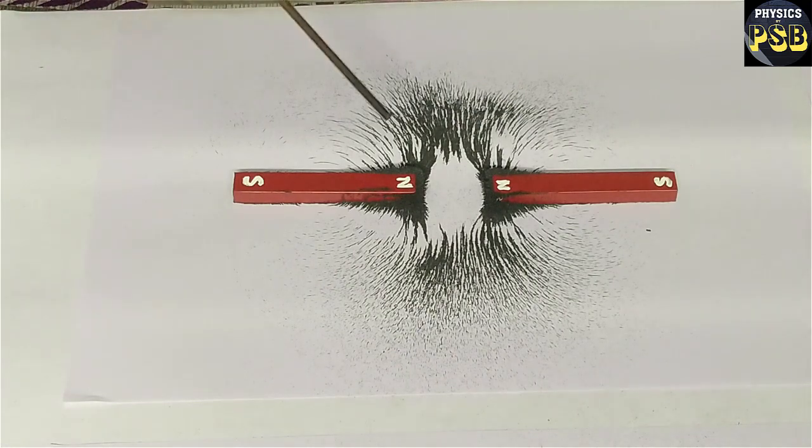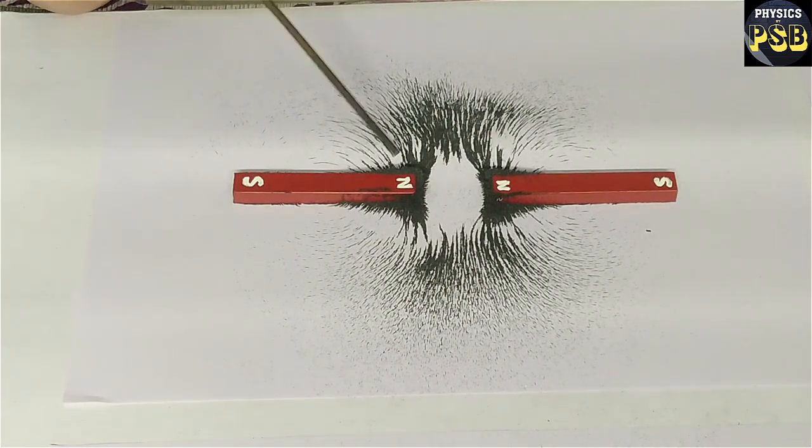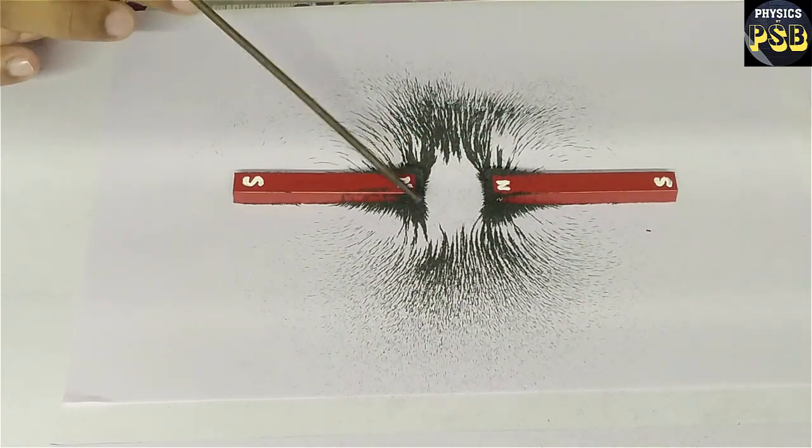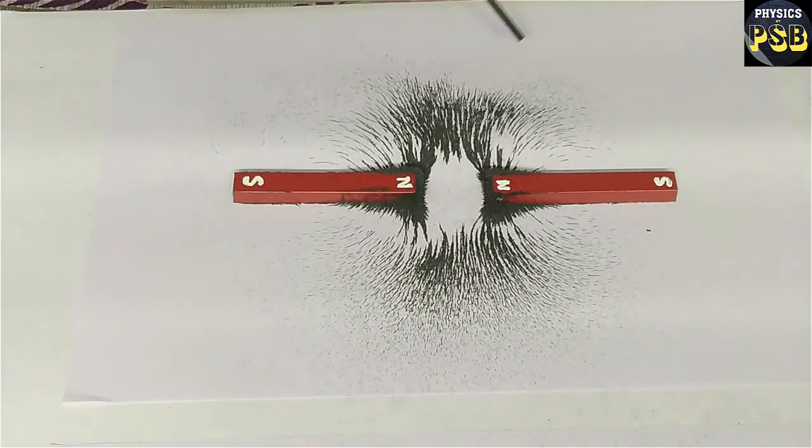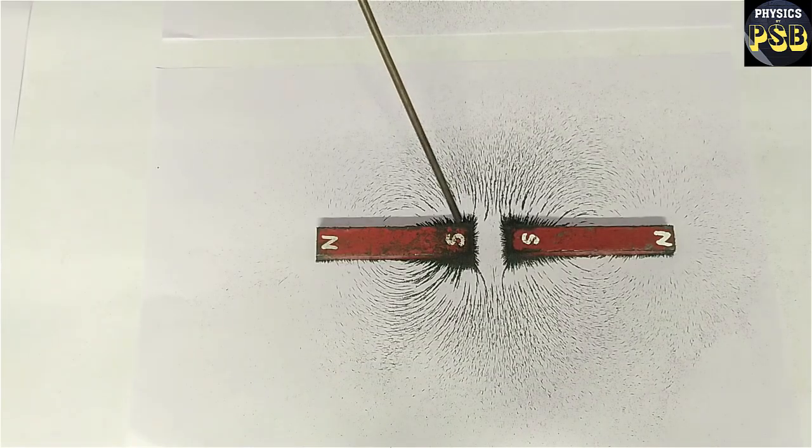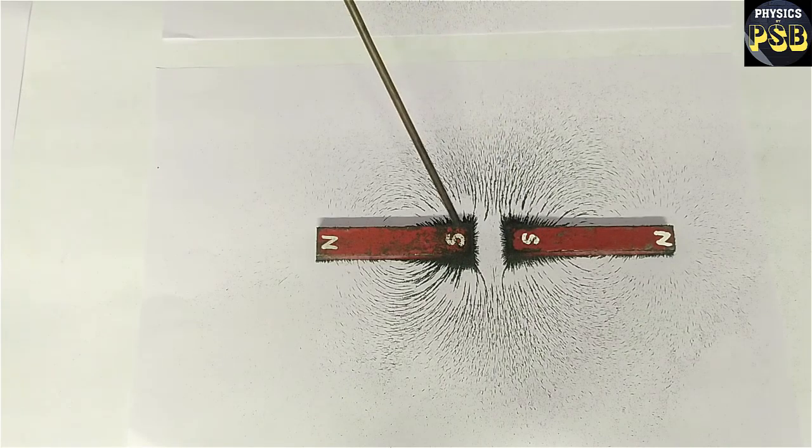Whereas, in case of same poles, when north pole is brought near north pole, they are found to repel each other. Even the magnetic field lines are observed repelling each other. The same thing is observed between south poles of magnet.